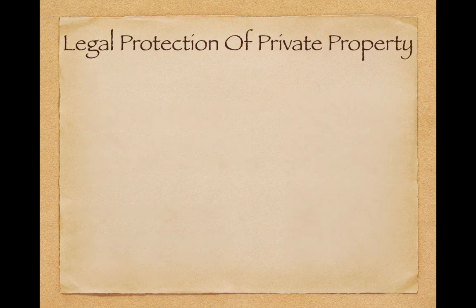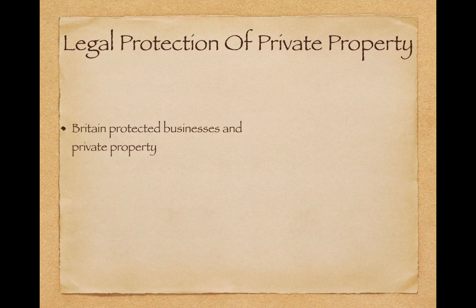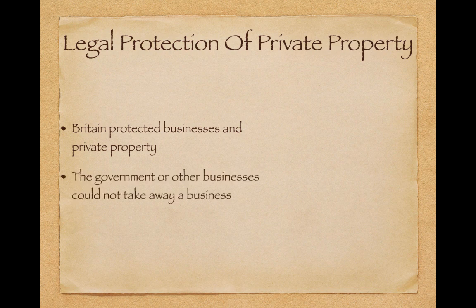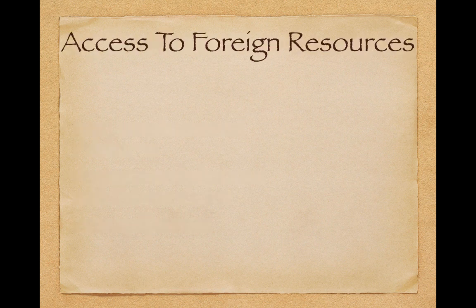Legal protection of private property was an important cause of the Industrial Revolution. Britain protected businesses and private property — not every state did this, but Britain was one that did. The government or other businesses could not take away a business, so business owners had security knowing their businesses would not be taken. This encouraged the production of goods.